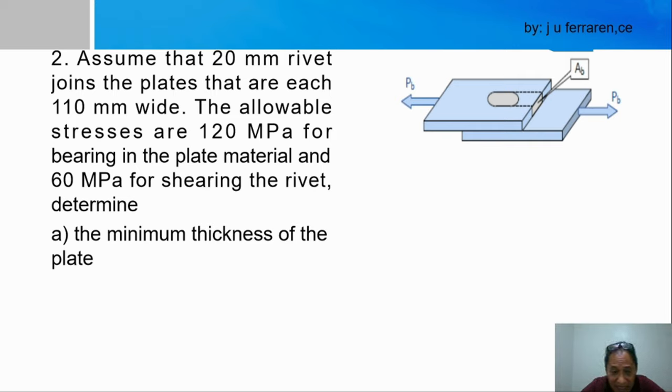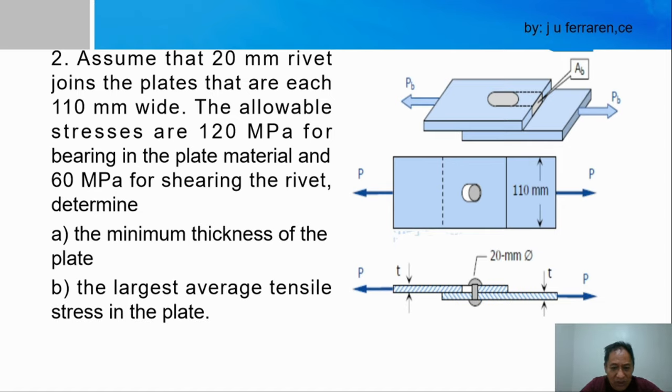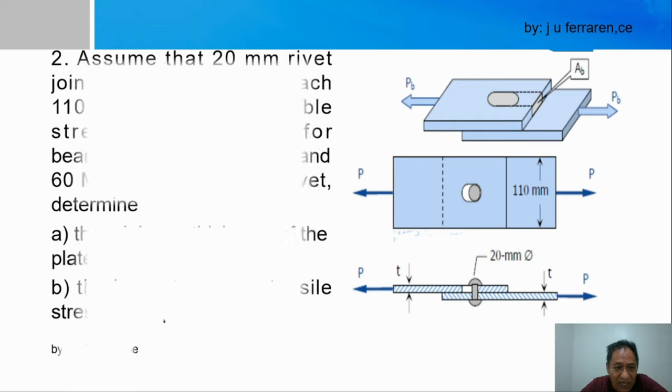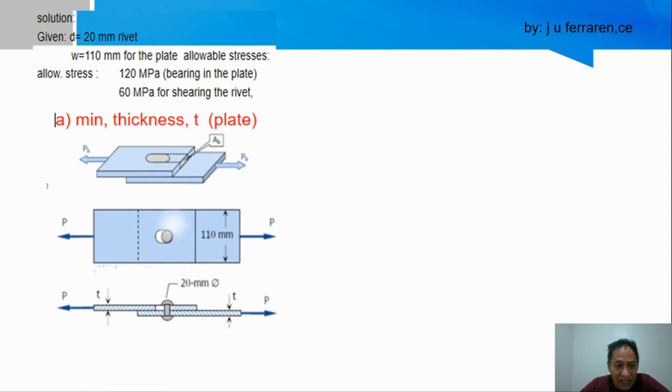The rivet has a diameter, so it has an area. It has a shearing force you can possibly arrive with. It has actually a shearing stress, so you can possibly arrive with a shearing force, right? For the complete figure - let us collect the given. The diameter of the rivet is known, width of the plate is known. Allowable stresses for the bearing of the plate and 60 MPa for the shearing of the rivet. What is required in A is the minimum thickness of the plate. This is the thickness, this one. We do not know the thickness.